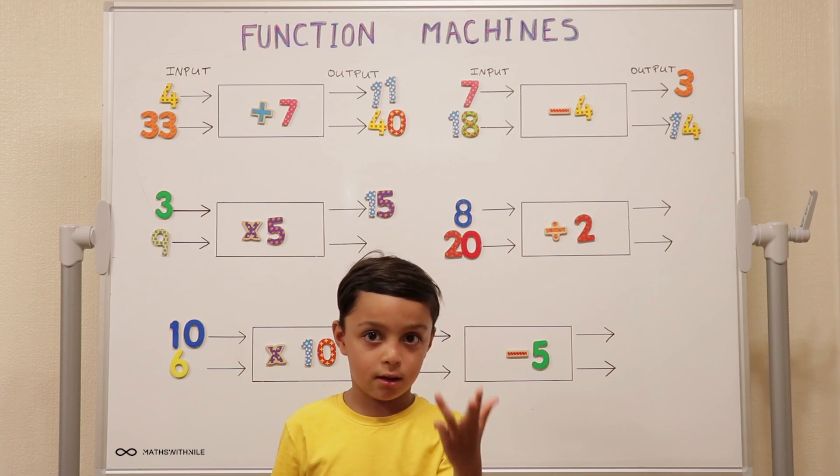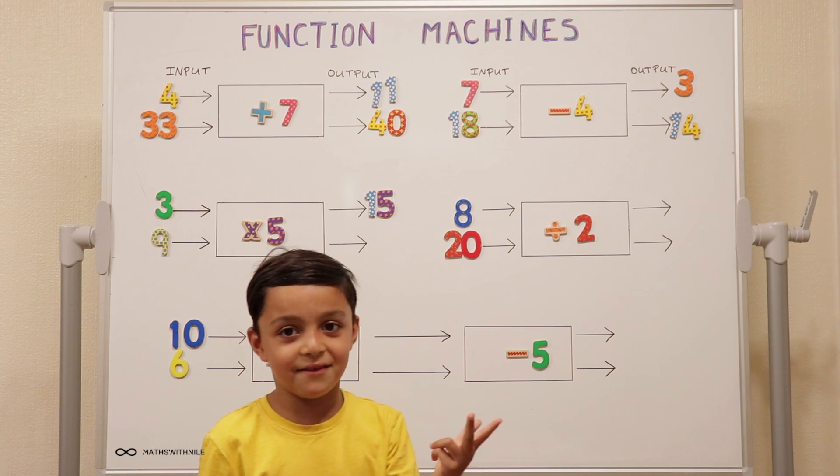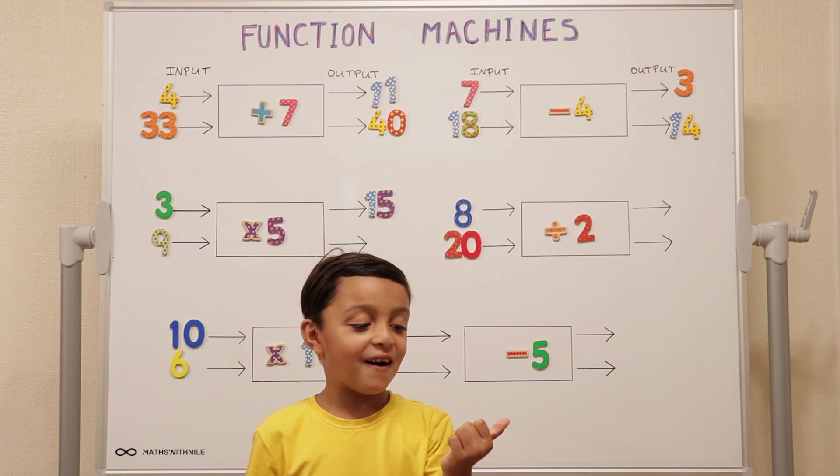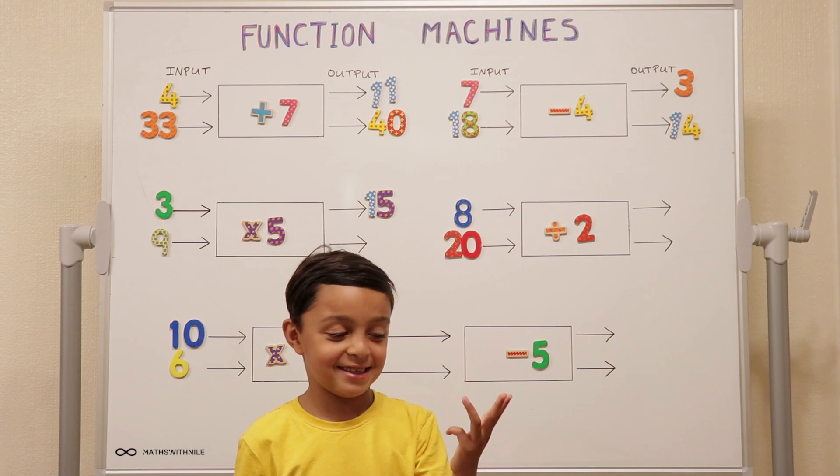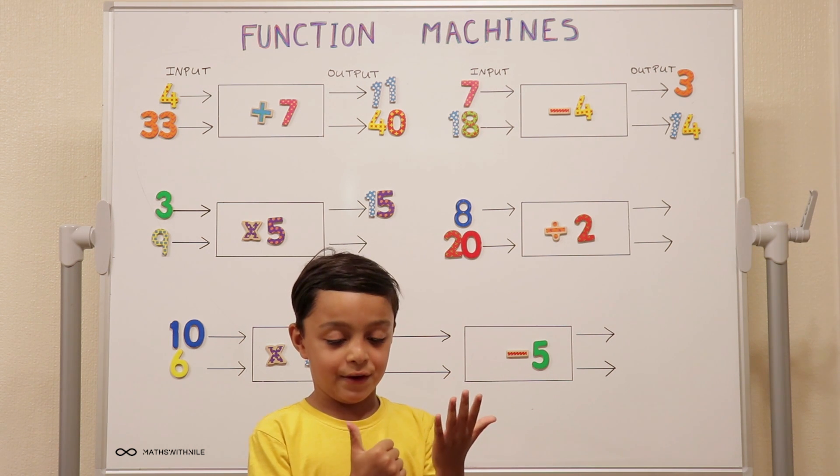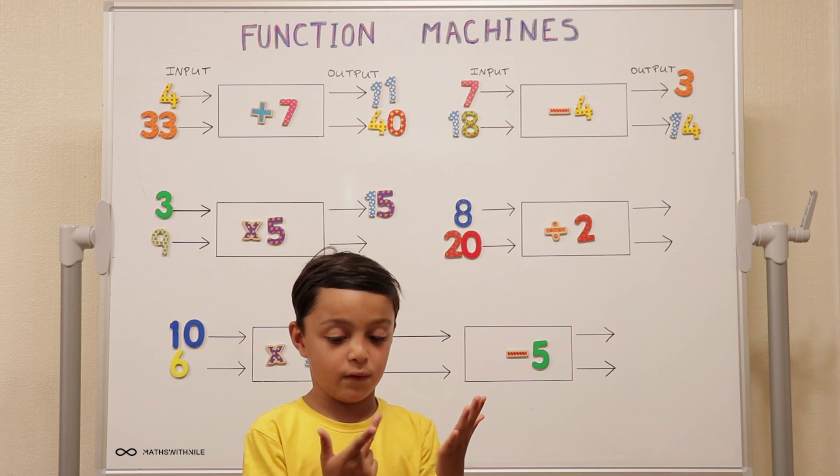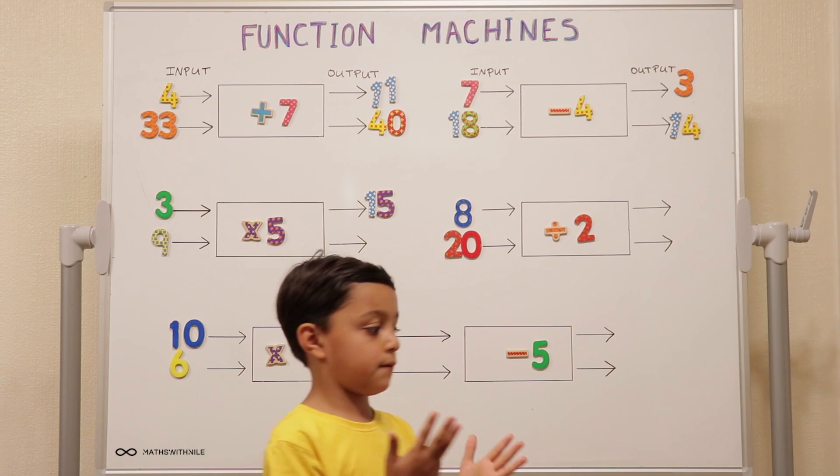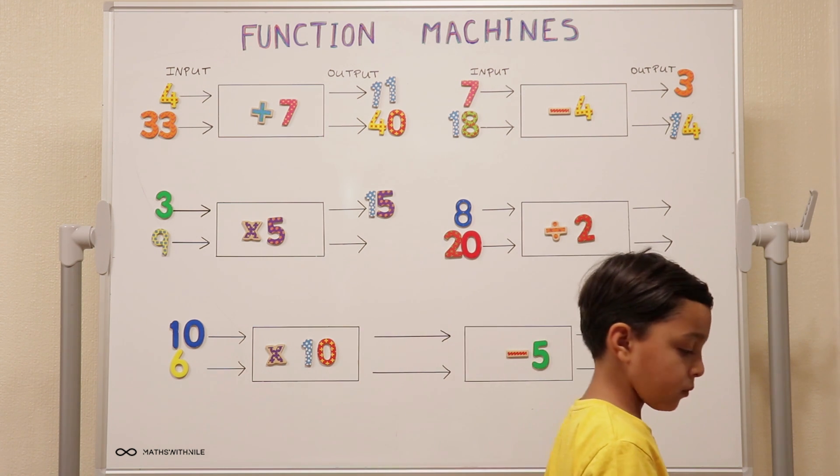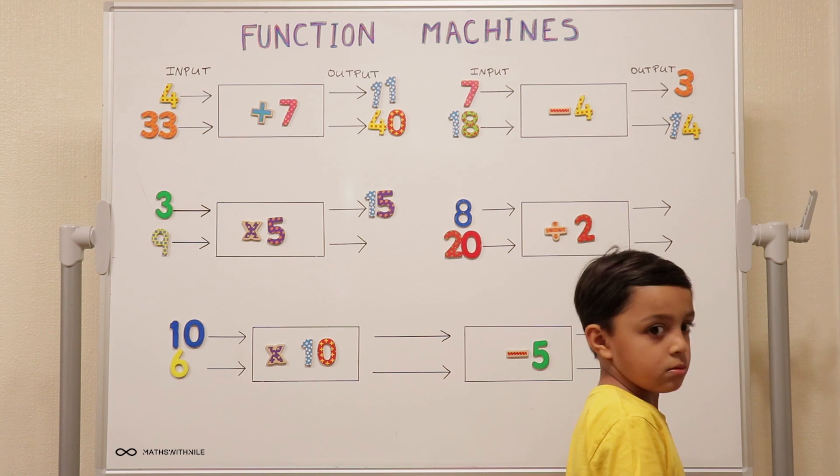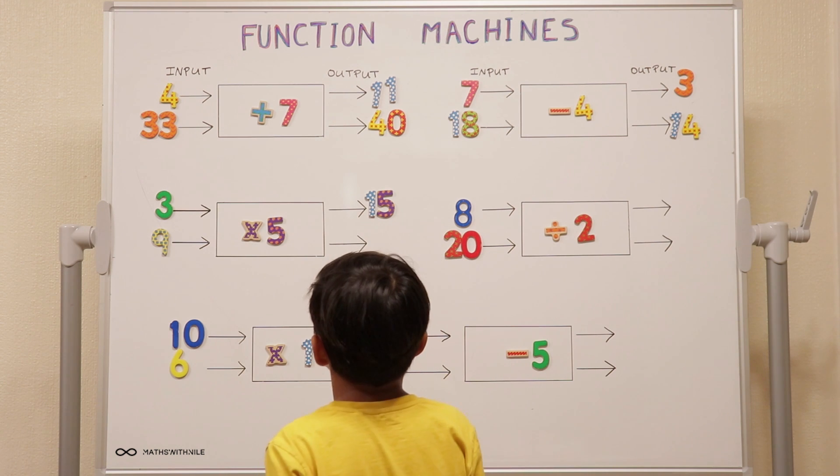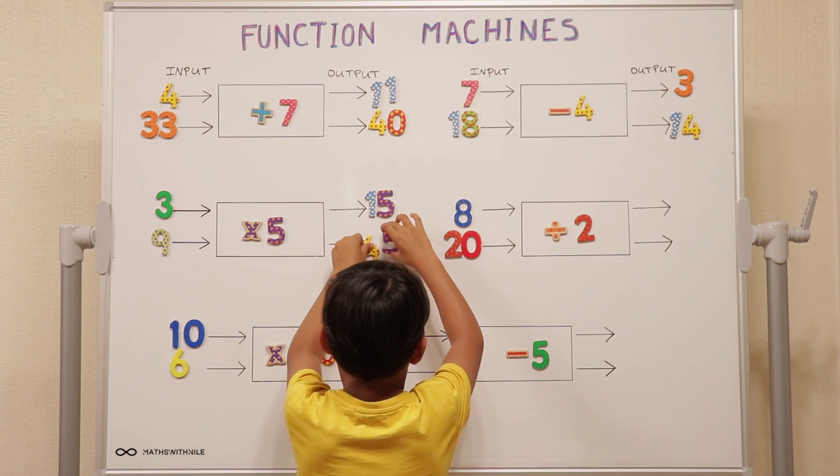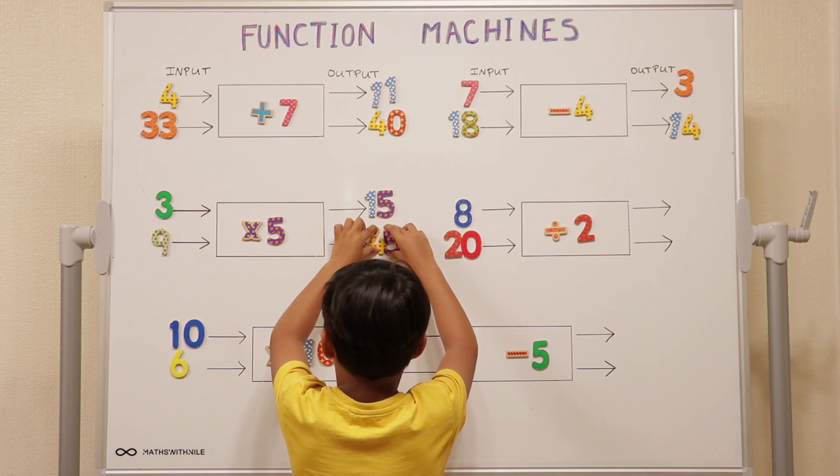I'm counting up in five. Five, ten, fifteen, twenty, twenty-five, thirty, thirty-five, forty, forty-five. So nine times five is forty-five. Very good.